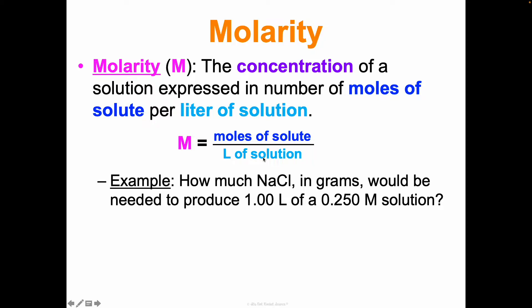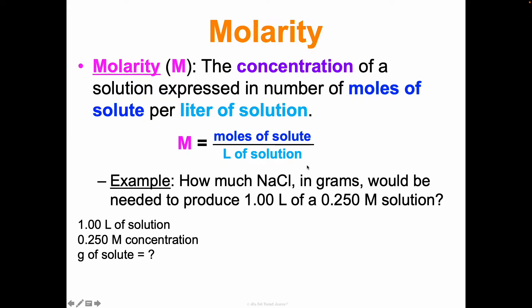Let's use RADAR. We've already read the problem. Let's analyze: what do we know? We have one liter of solution with a 0.250 molar concentration. What do we want to know? The grams of solute. Looking at our equation, we can find moles of solute, and then to get from moles to grams we'll need the molar mass - so we'll need the molar mass of sodium chloride, NaCl.